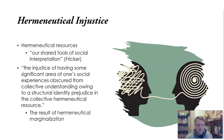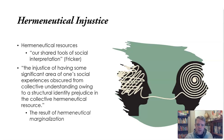Hermeneutical injustices are the result of hermeneutical marginalizations, and these marginalizations can take two forms. One form occurs when someone — or some group, because of their identity — is prevented from accessing certain hermeneutical resources, certain resources needed for making sense of the experiences they are having. On a micro level, you can imagine coming to work in a new office: every office has its own norms, its own lingo, its own acronyms and office-speak.